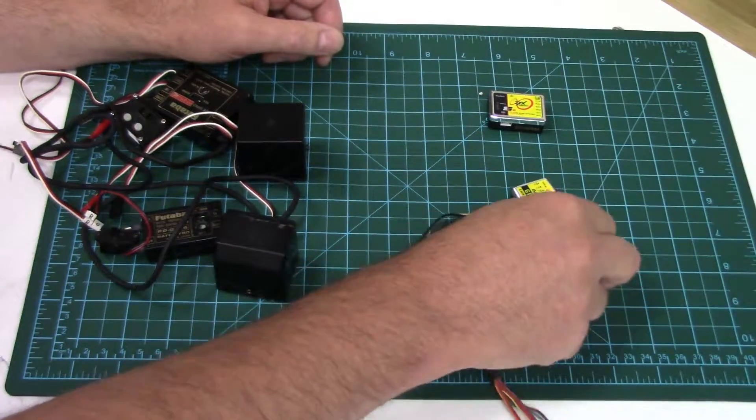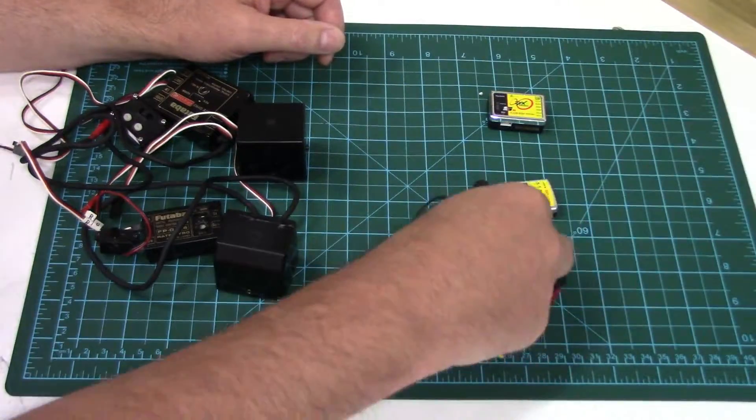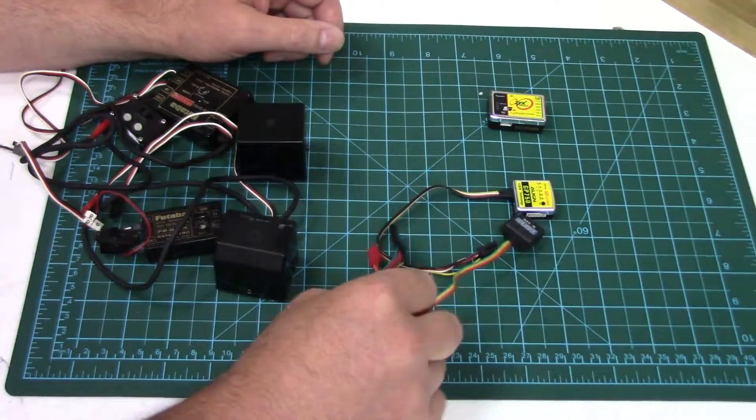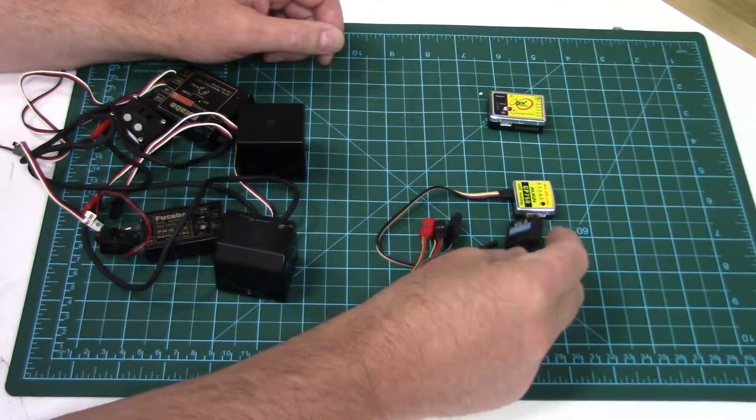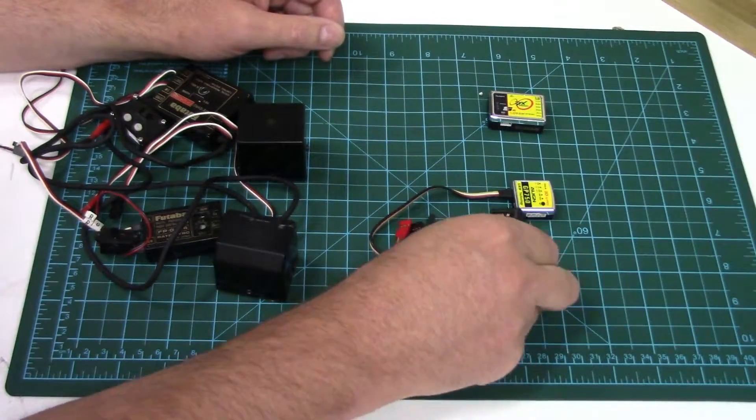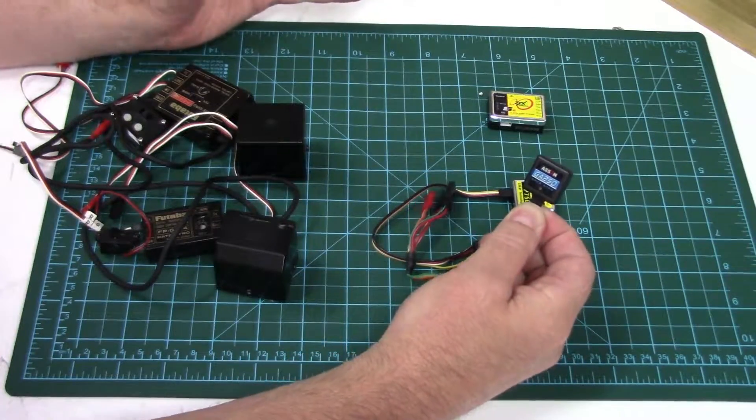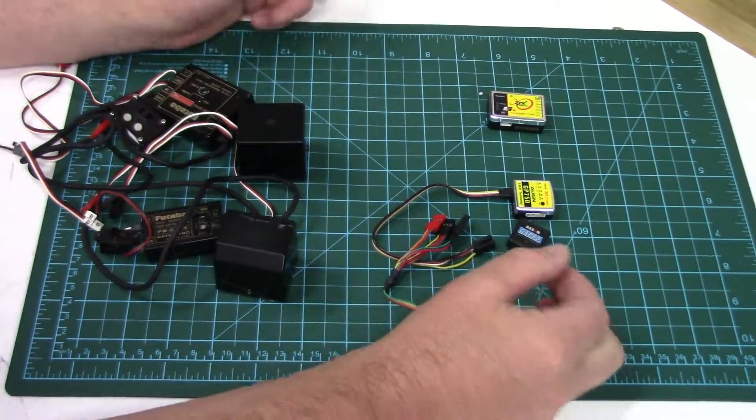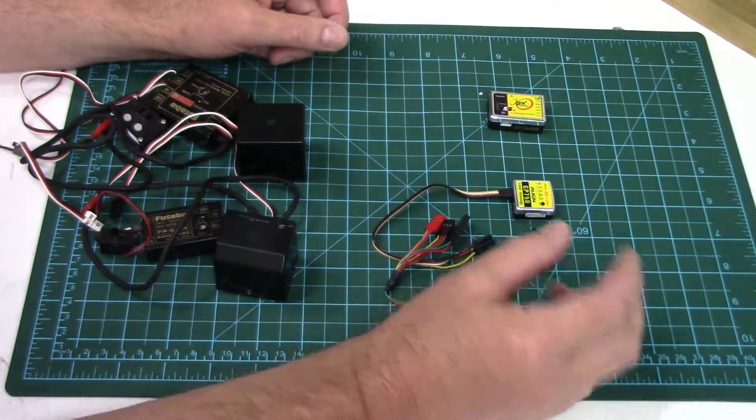On these new ones these are often called MEMS gyros which stands for micro electro mechanical system. The way they work is they use a vibrating structure gyroscope. It's a microscopic vibrating crystal or piezoelectric element that's vibrating really fast in a plane.